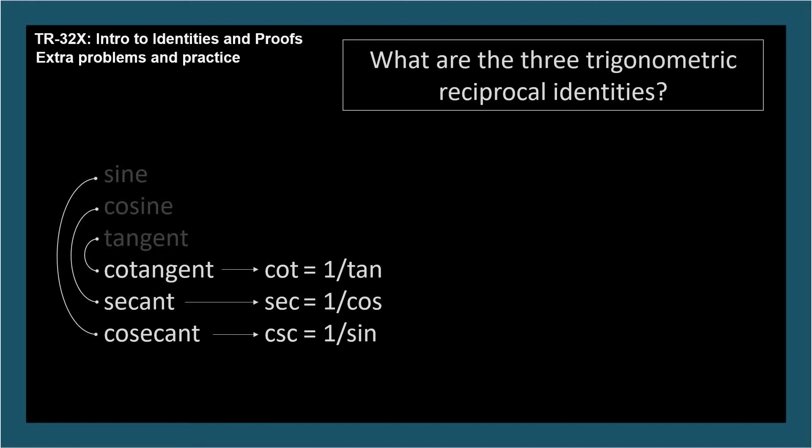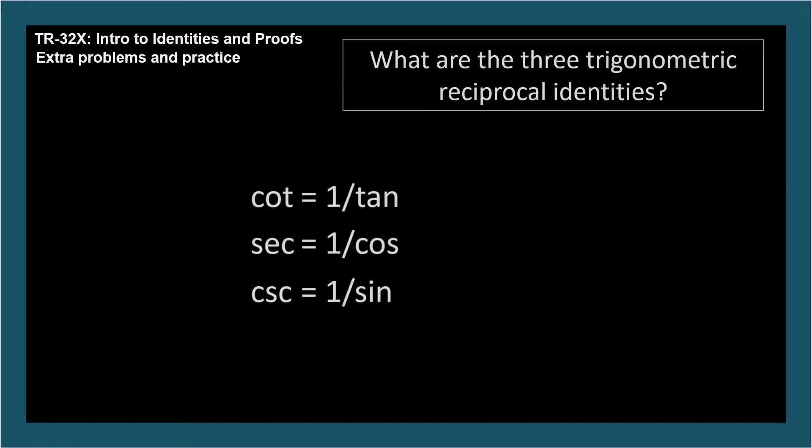Each of these identities can be rewritten by taking the reciprocal of both sides. The first is cotangent equals 1 over tangent. So tangent also equals 1 over cotangent. Secant is 1 over cosine, so cosine must equal 1 over secant. Cosecant equals 1 over sine, so sine must equal 1 over cosecant.